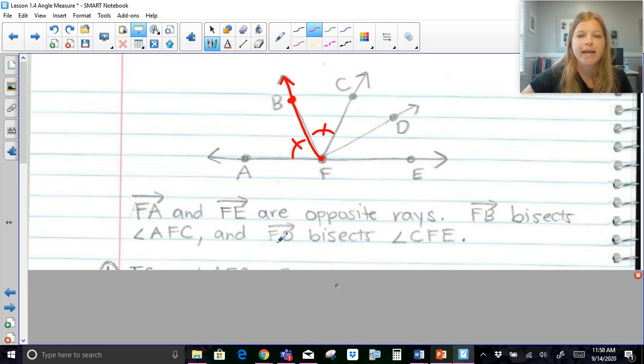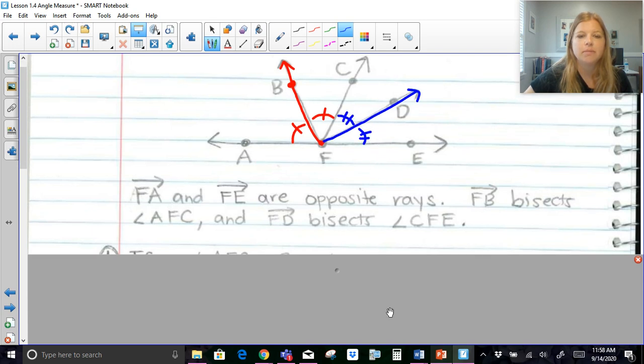It says ray FD bisects angle CFE. So if FD is a bisector as well, then it's saying that this angle is congruent to this angle.